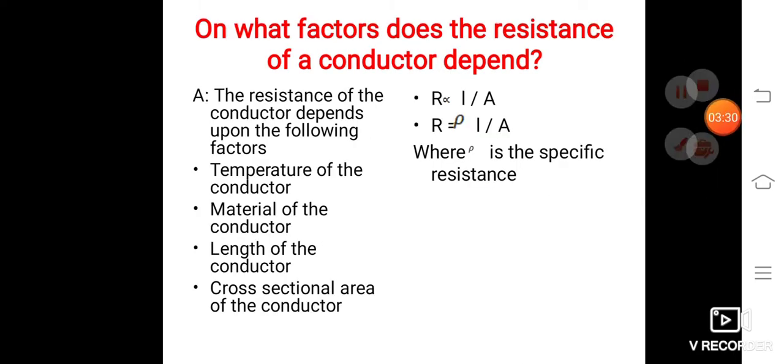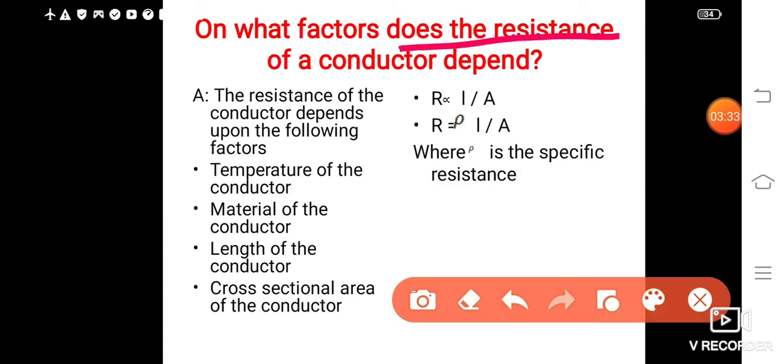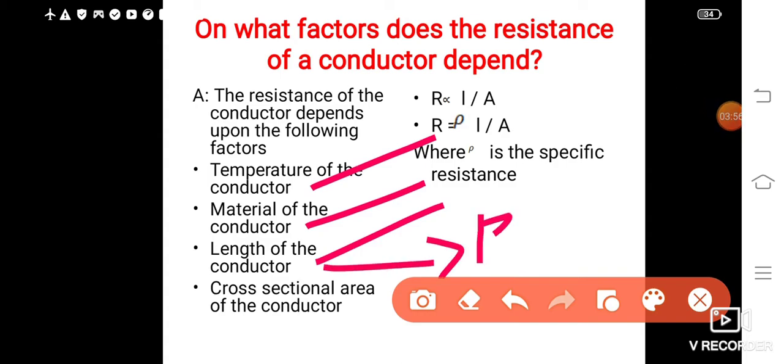Here is one text question. On what factors does the resistance of a conductor depend? So the resistance of the conductor depends upon the following factors. First one is temperature of the conductor, material of the conductor, length of the conductor. For this, here you can write R is directly proportional to L.